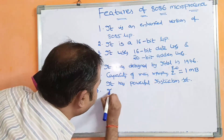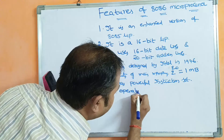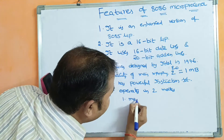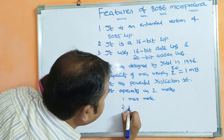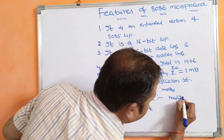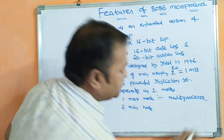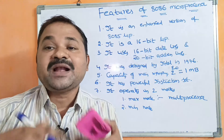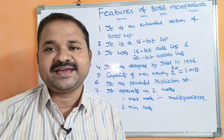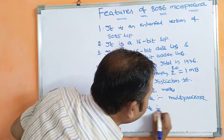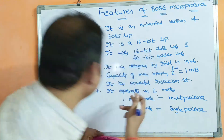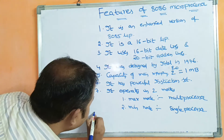The 8086 operates in two modes: maximum mode (max mode) and minimum mode (min mode). Max mode is suitable for a multiprocessor system, which contains multiple microprocessors, giving very high performance and throughput. Min mode is suitable for a single processor or uniprocessor system.